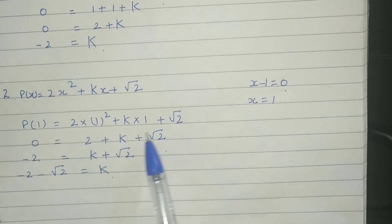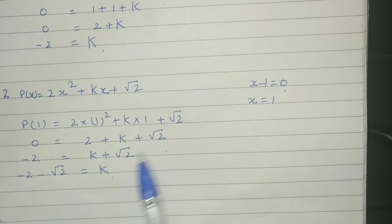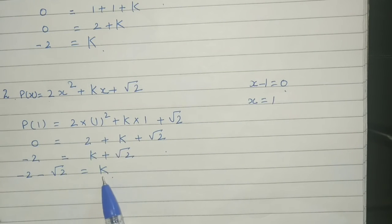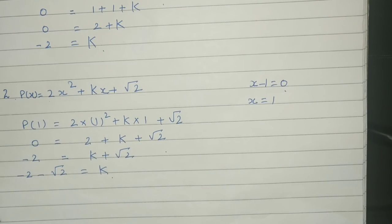So when we multiply it, we get 2 plus k plus root 2 equals 0. Value of k is equal to minus 2 minus root 2. So students, hope you understand it very well. How we find the value of k?